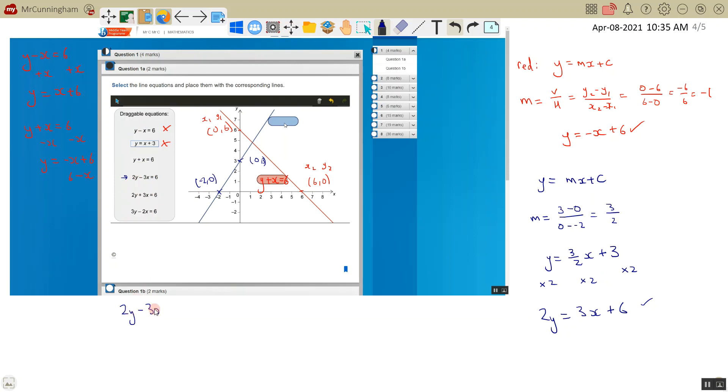If I rearrange it so it's 2y equals, that means I have to add 3x to both sides. I get 2y equals 6 plus 3x, or I could just write it as 3x plus 6, which is the same as what we've got. So this one corresponds to our blue line.